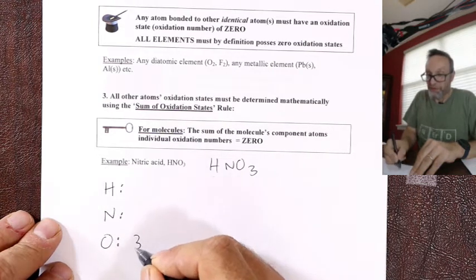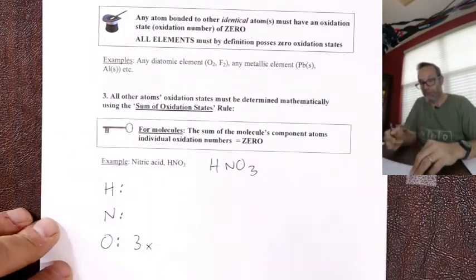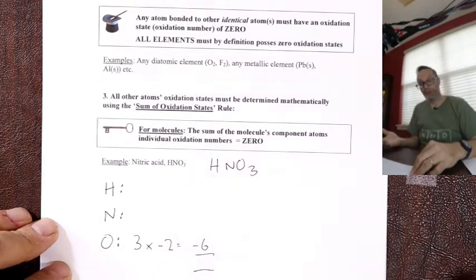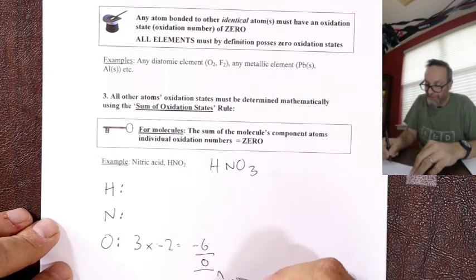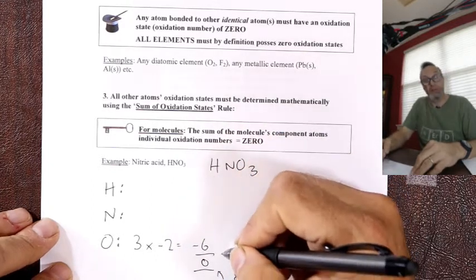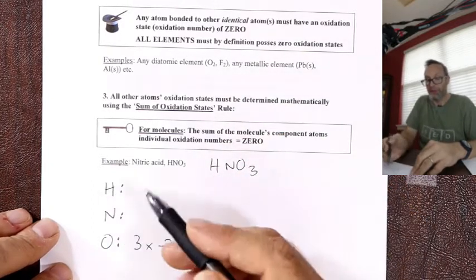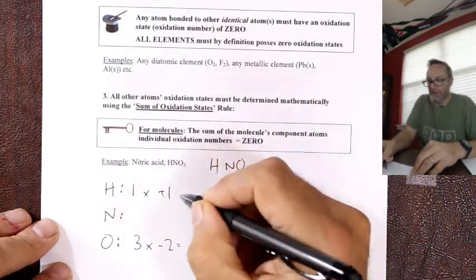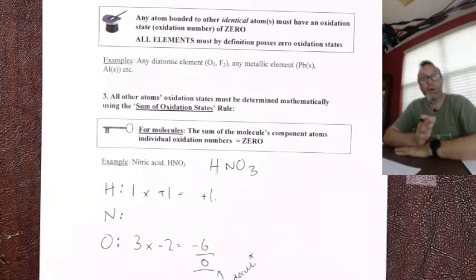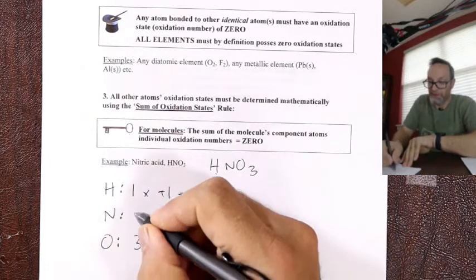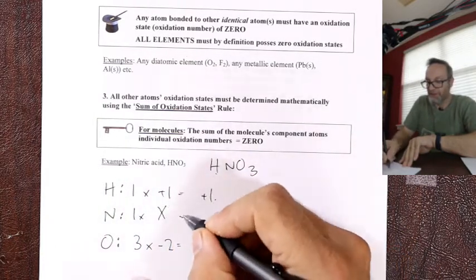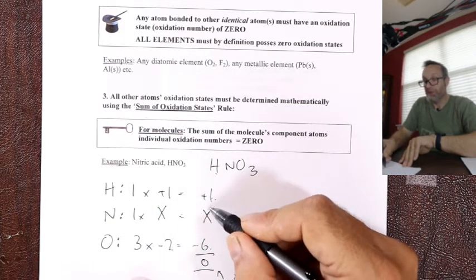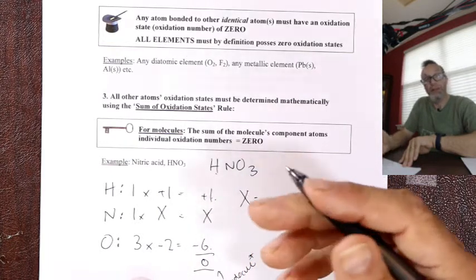There are three oxygens — it's the winner, so it steals electrons, its natural oxidation state is minus two. It contributes minus six to the total. The total is zero because it's a molecule — this is the sum of the oxidation states rule. Hydrogen is the loser: one times plus one equals plus one. Nitrogen is the one that adjusts: one nitrogen times its magic oxidation state X. Minus six plus one plus X equals zero, so X equals plus five.